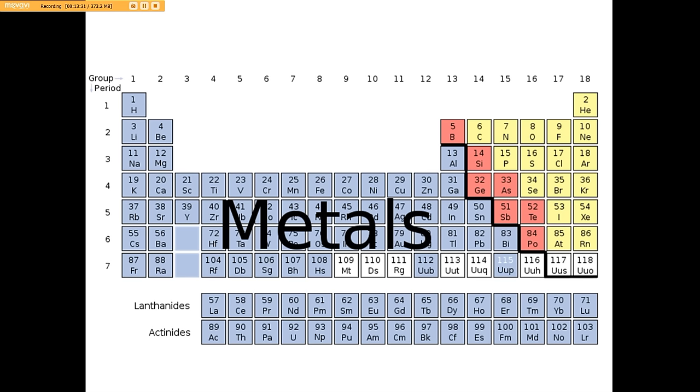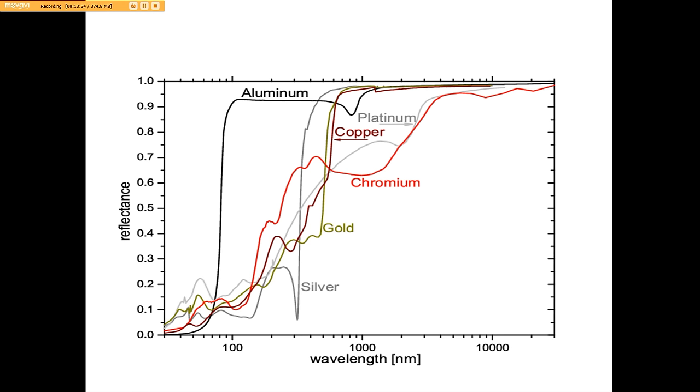I think some of you, the light bulb is going off. So here is the frequency wavelengths of metal: silver, gold, chromium, copper, platinum, aluminum. Starting to learn something here, folks.